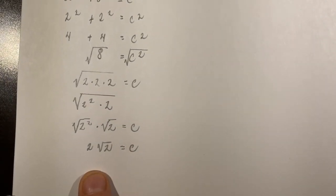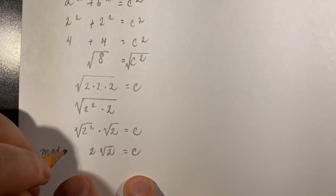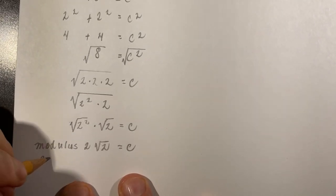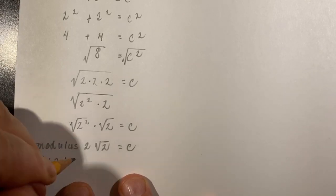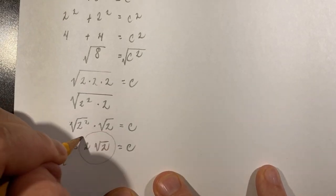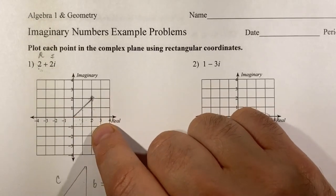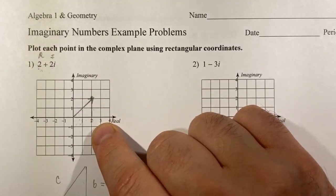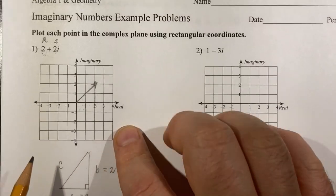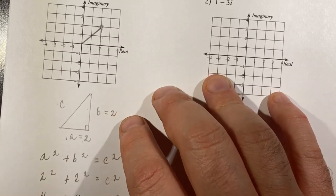This two square root two is called the modulus — M-O-D-U-L-U-S. The modulus of two plus two i is two square root two, and that is this distance. It's like the magnitude of a vector, and it's two square root two. The special triangle relationship was one, one, square root two — or scaled up: two, two, two square root two.